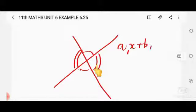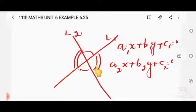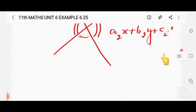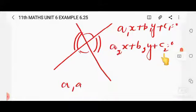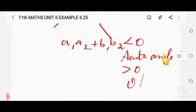Assume one straight line equation is a1x + b1y + c1 = 0, call it L1, and another straight line equation is a2x + b2y + c2 = 0, call it L2. Check whether c1 and c2 are positive. Then check a1a2 + b1b2. If it is less than 0, the angle between them is acute.